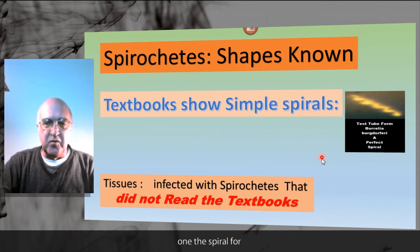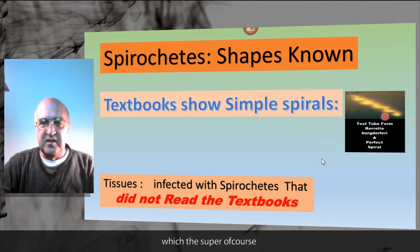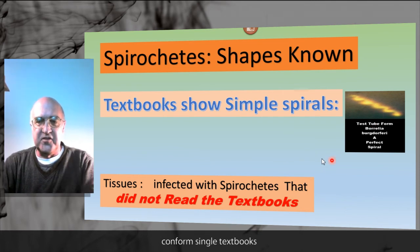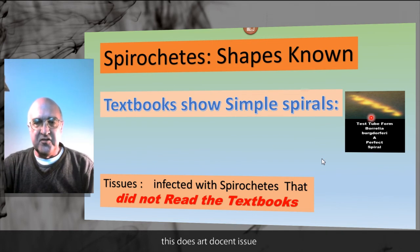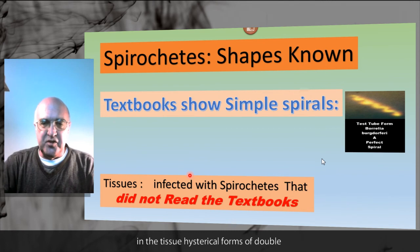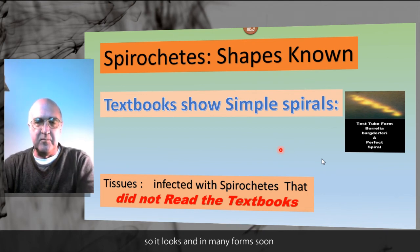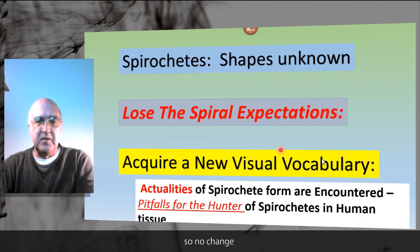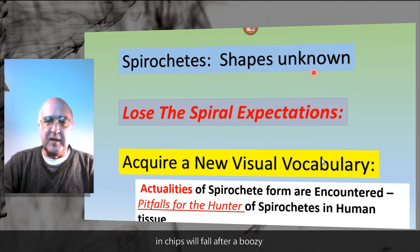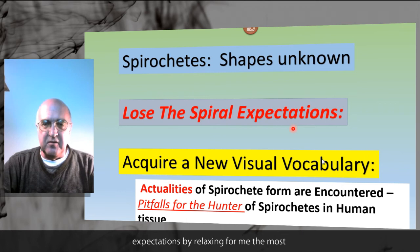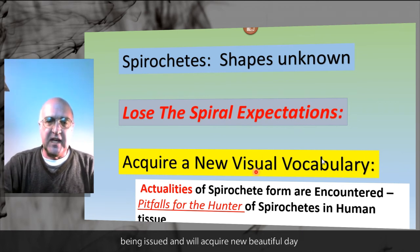Here we have the spiral form, which is the perfect corkscrew form seen in all the textbooks. When this spirochete goes into tissue, the infected tissue has spirochetal forms that do not look spiral anymore. That's because spirochetes don't read the textbooks and they have many forms they can assume. We have to lose the expectation of spiral — it's the form we will see in tissue — and will acquire a new visual vocabulary.